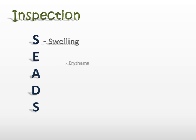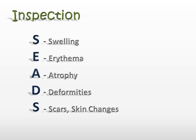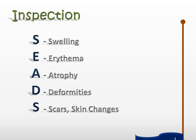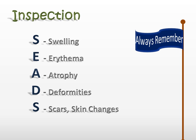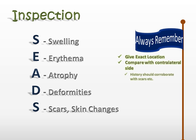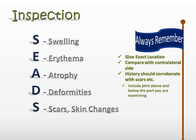The first step is inspection. Remember the mnemonic SEADS for swelling, erythema, atrophy, deformities, scars, skin changes, sinuses, etc. When describing findings, give the exact location using bony landmarks and measurements from those landmarks. Never forget to compare with the contralateral side. Your history should corroborate with the scars and sinuses on the patient's limbs. Always examine the joint above and the joint below the part you are examining, as this will help you reach a diagnosis without making mistakes.